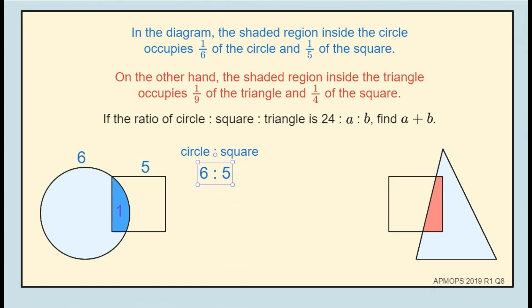The red shaded region is one-ninth of the triangle and one-quarter of the square. So, the ratio of the square to the triangle is 4 to 9.